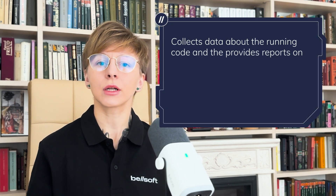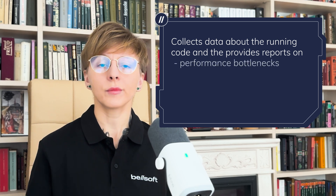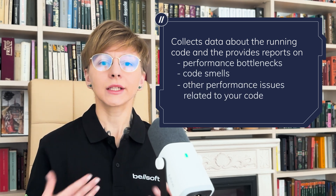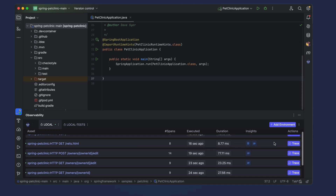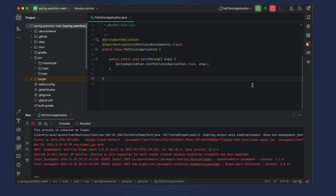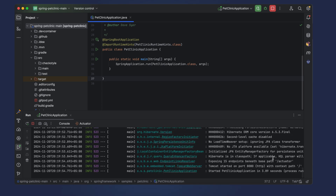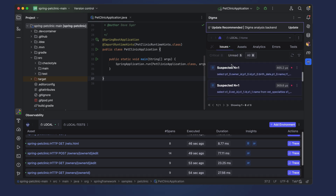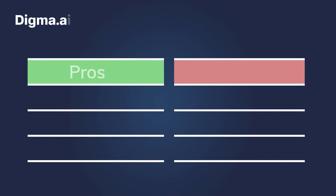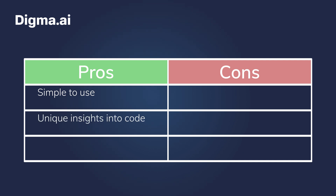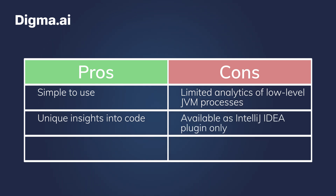DIGMA AI integrates into IntelliJ IDEA as a plugin. It uses OpenTelemetry under the hood to collect data about the running code, and then provides reports on performance bottlenecks, code smells, and other performance issues related to your code. It can collect data on CPU and heap usage too, but its main focus is on the code. Using DIGMA is super easy — simply install the plugin, follow the instructions to set up the analytics engine, and you are ready to go. Each time you run your code with DIGMA enabled, it runs silently in the background and collects data, and then you can analyze the reports right in IntelliJ IDEA. DIGMA is really simple to use and offers unique insights into the code, but it has limited analytics of low-level JVM processes and is available only as an IntelliJ IDEA plugin.